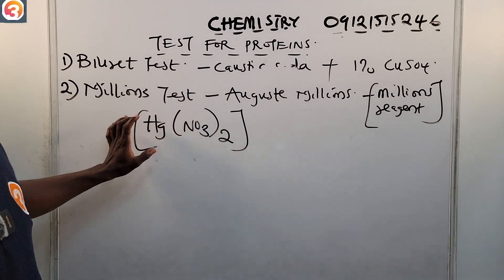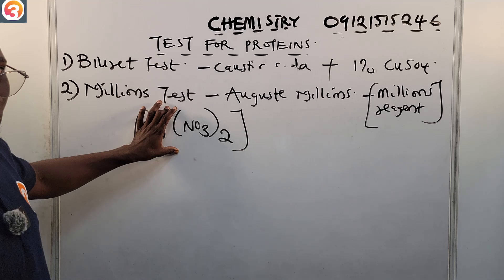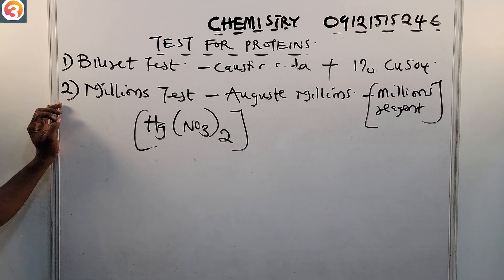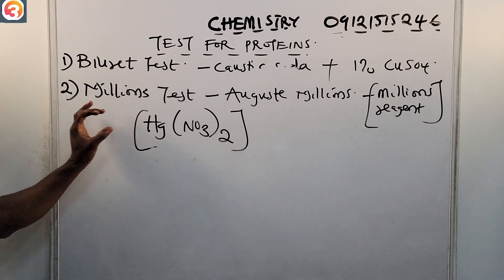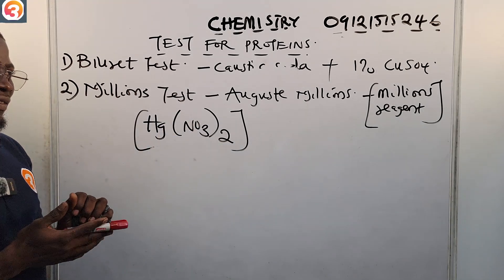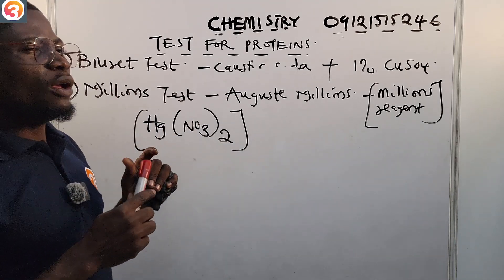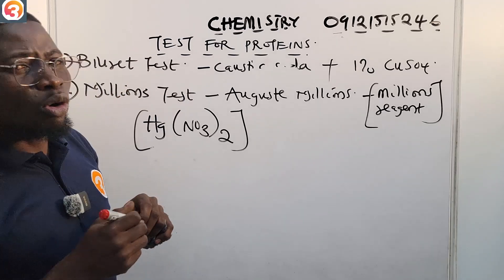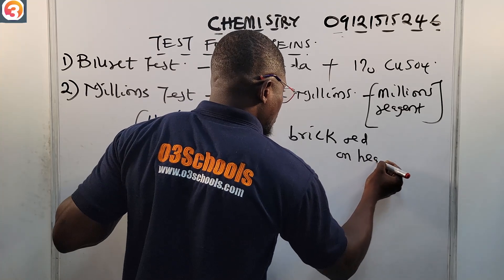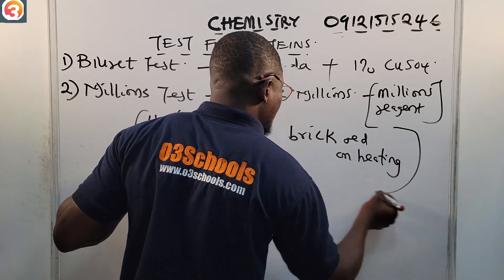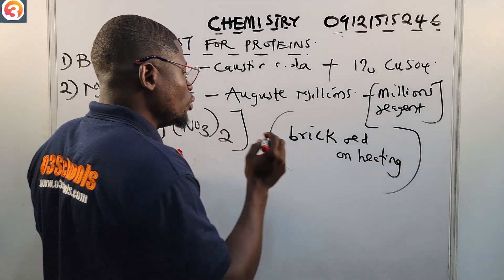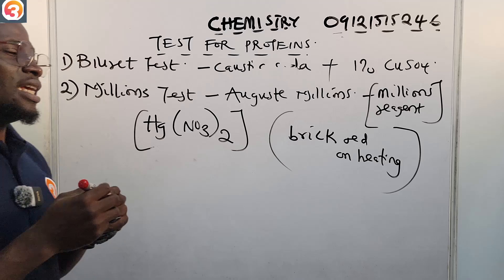August Millon proposed this test and he said we should use metallic mercury in trioxonitrate(V). And what should we observe? He said we are going to observe a white precipitate that immediately turns brick red on heating. So this is the positive result for the test.